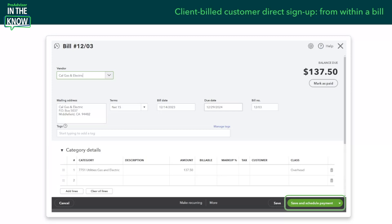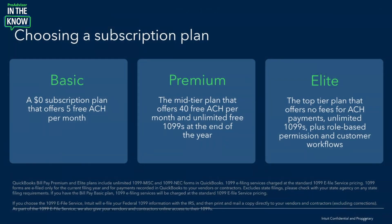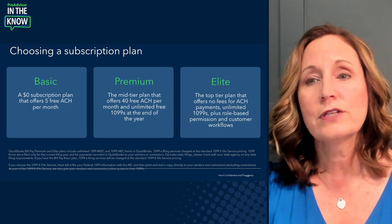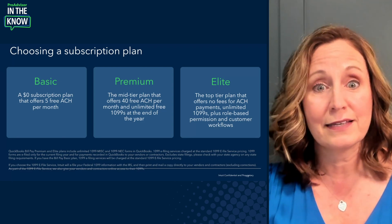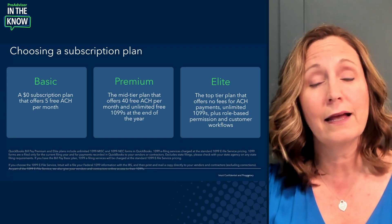Once they've completed the application, they will receive an email telling them whether they've been approved. Now, these are the three plans. The Basic Plan is a $0 subscription with five free ACH payments per month, and $0.50 per ACH after that. It also includes automated bill creation and auto matching of transactions — meaning when the payment goes out and clears the bank, it's automatically matched in the bank feed.